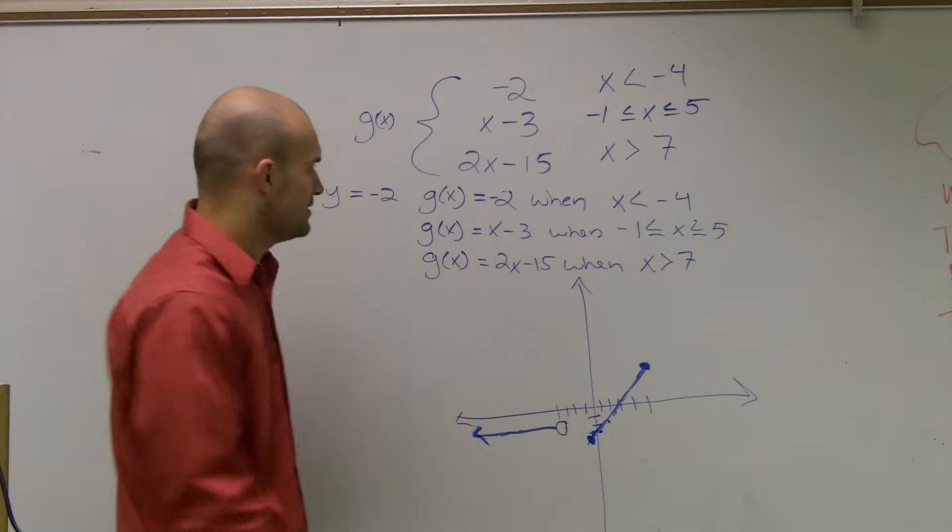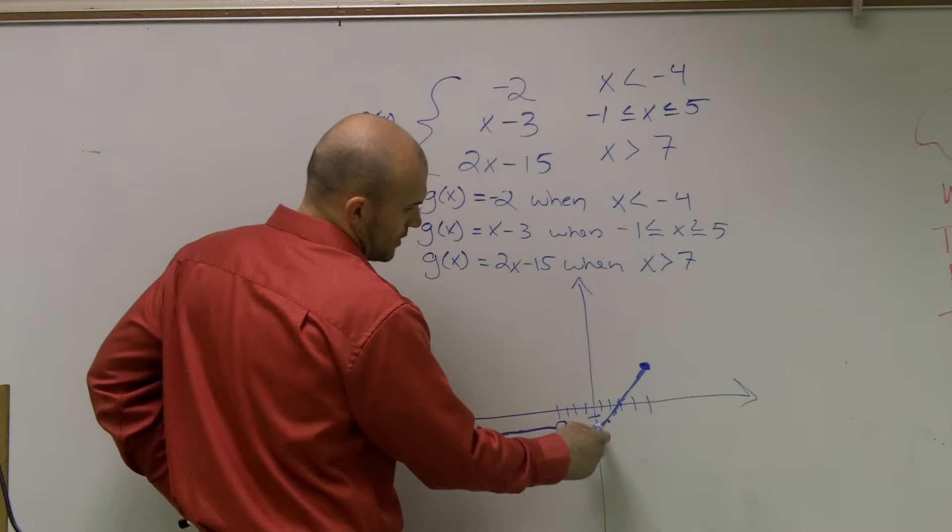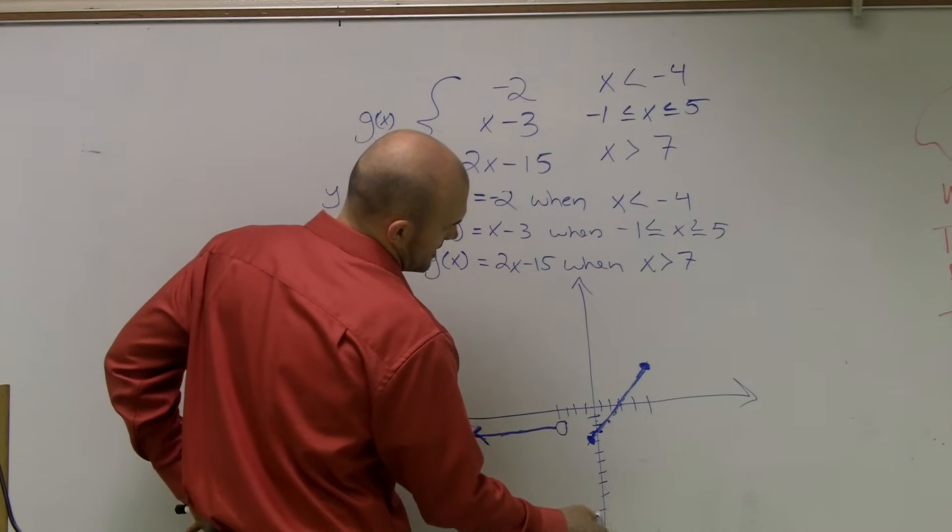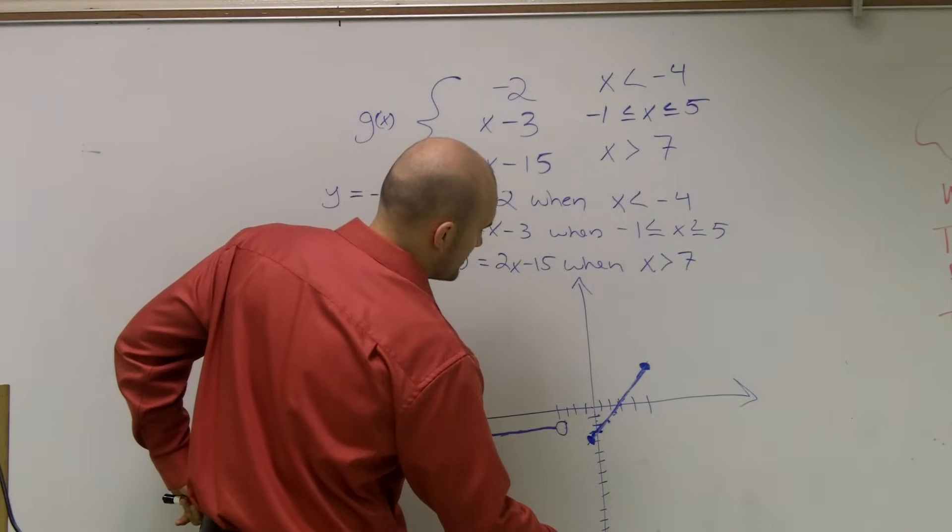Then, the last one, y equals 2x minus 15. So now I need to go down to 15. 1, 2, 3, 4, 5, 6, 7, 8, 9, 10, 11, 12, 13, 14, 15. Up 2 over 1. Or probably like that.